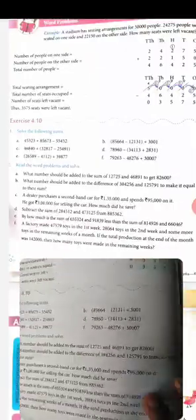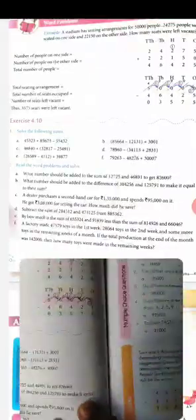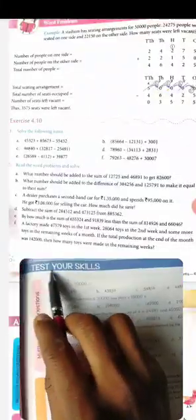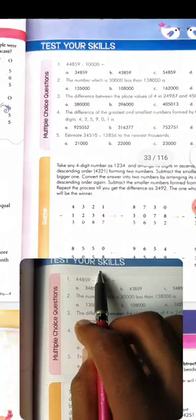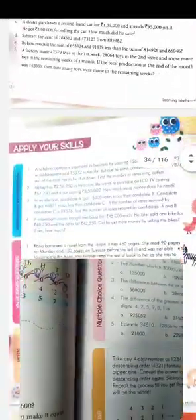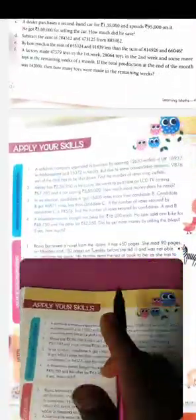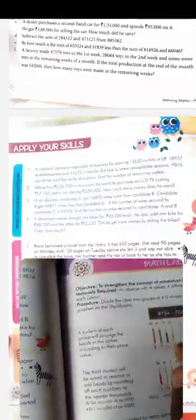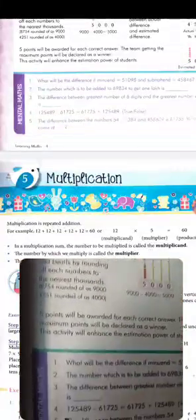And baat aatiya ab yi chapter khatm ho ga, end ho ga. Ab test your skill part, yeh aap ko solve karna hai, aap ko aapna skill test karna hai without any cheating. And apply your skill part, yeh and math lab to aap ko read karna hai kiya se kya hua hai or yeh mental math joh part hai.